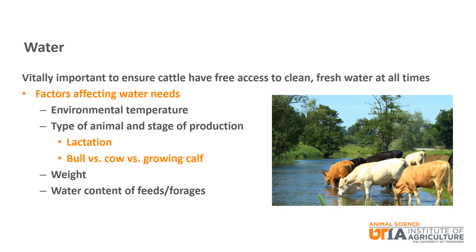It should be noted that there are several factors that can affect the water needs of beef cattle. Typically, the higher the environmental temperature, the more water an animal will need. The type of animal and stage of production can also have a dramatic effect on water needs — a lactating cow will definitely have an increased water requirement, and heavier animals also require more water. Finally, the water content of feeds and forages can affect water needs, as some feeds like silage and haylage have more water in them than others.